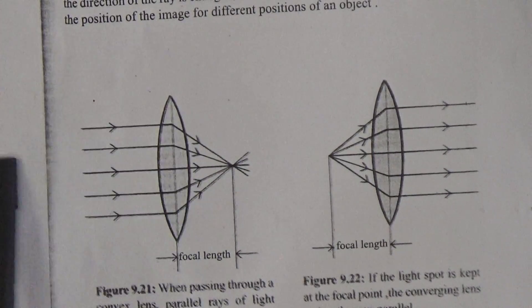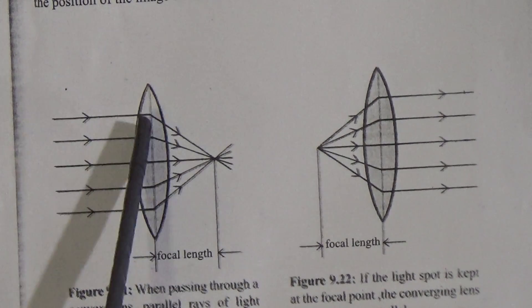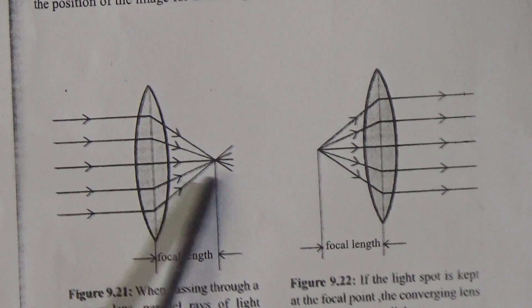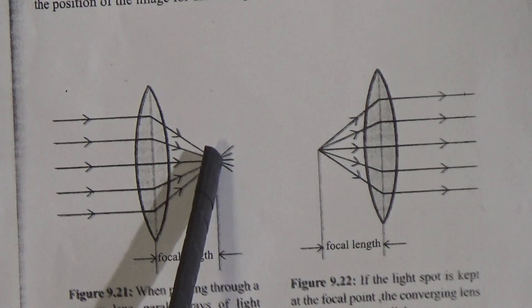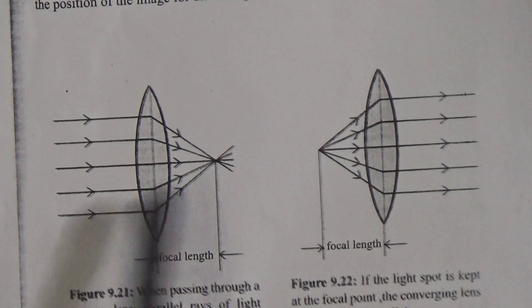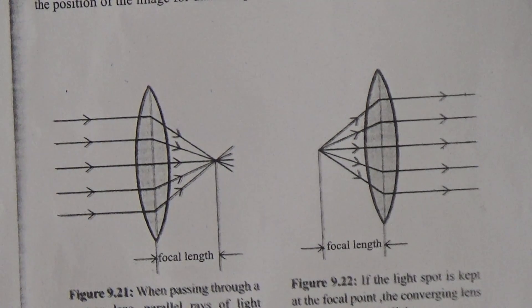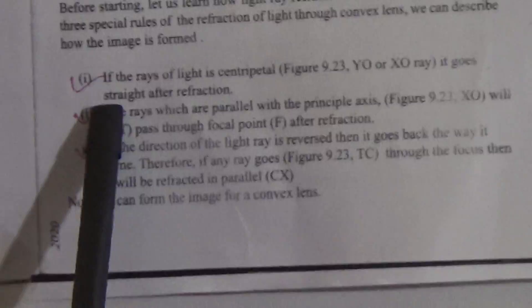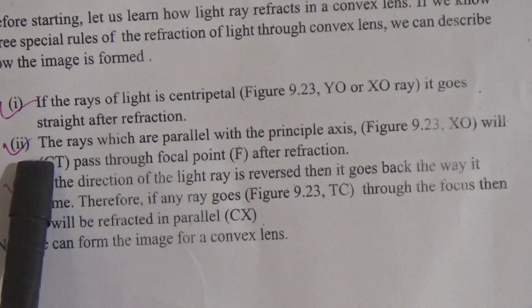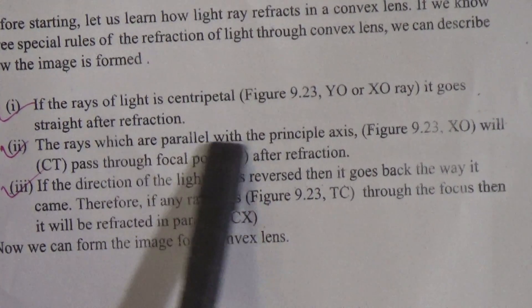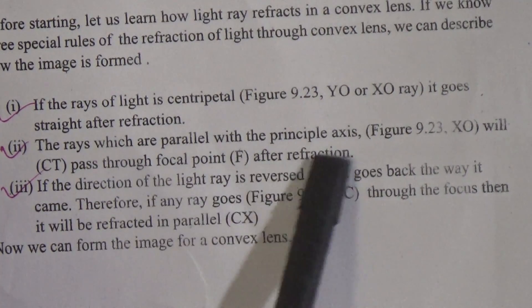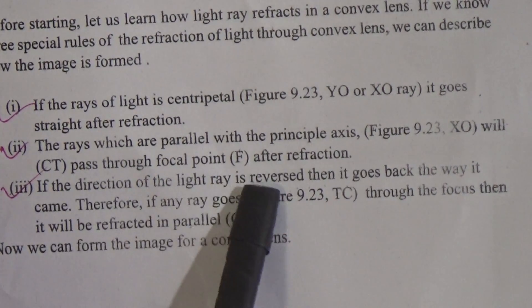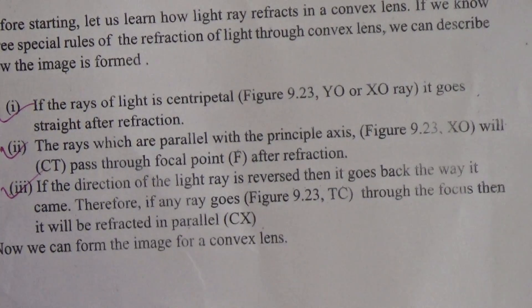For the convex lens, parallel light rays come in, and after refraction, all the rays intersect at one point — this point is called the focal point. This focal length is shown from the center of the lens to this point.